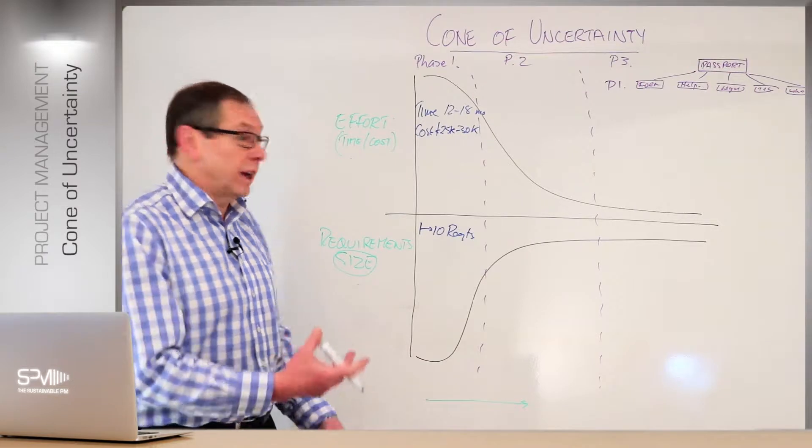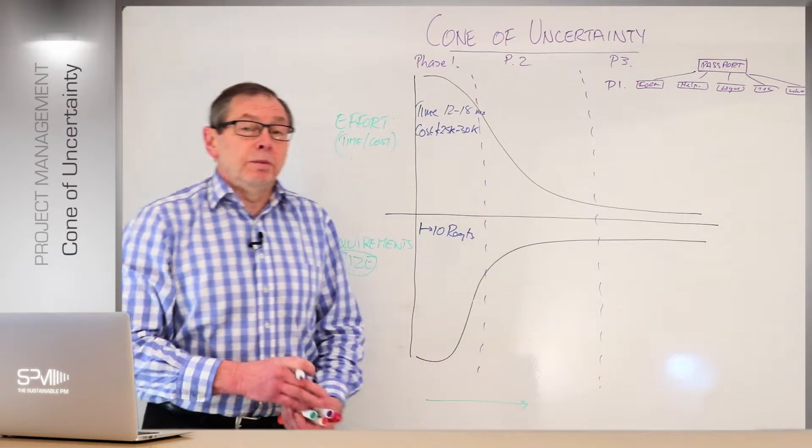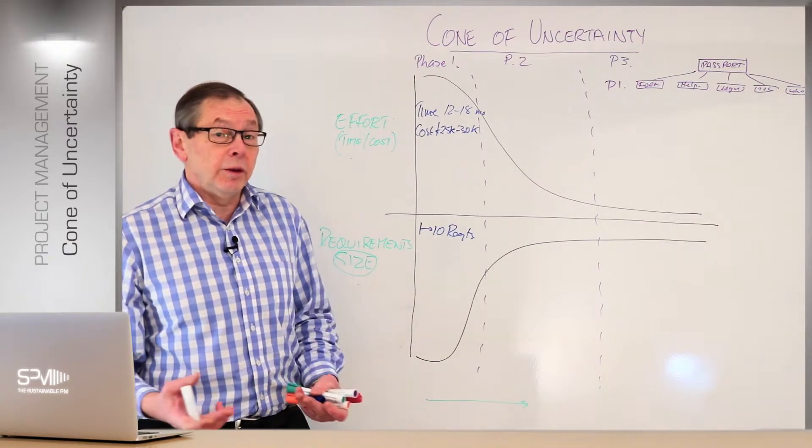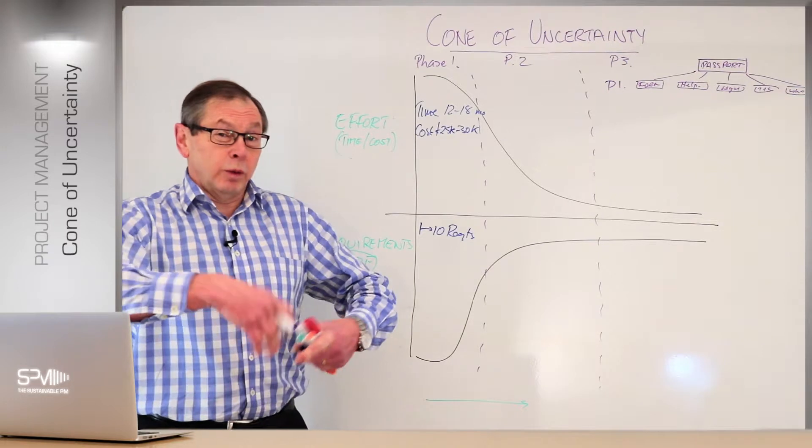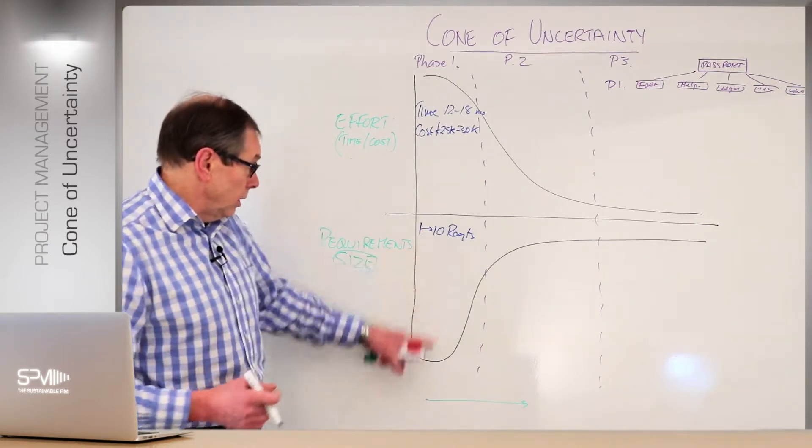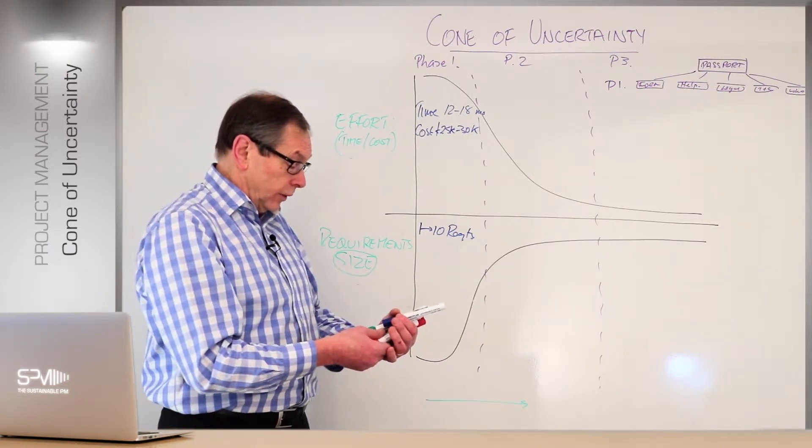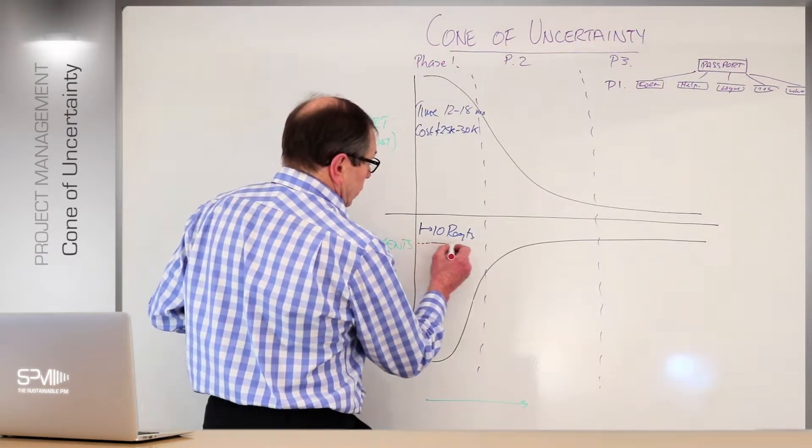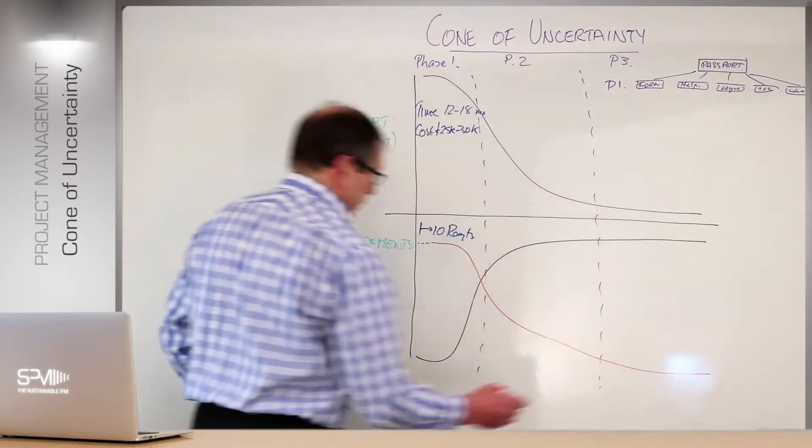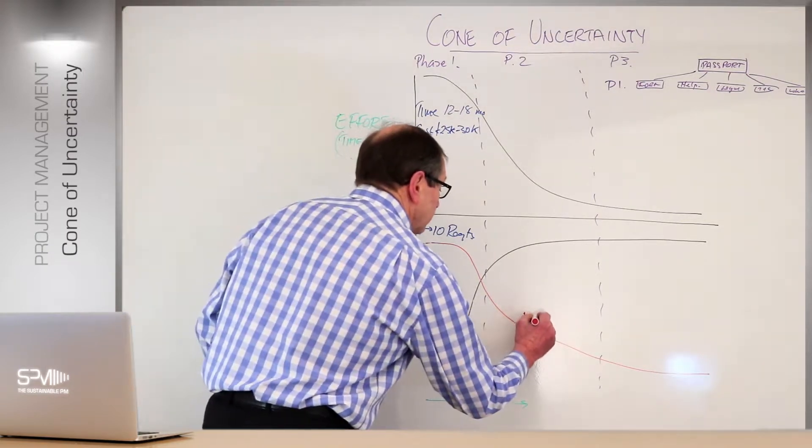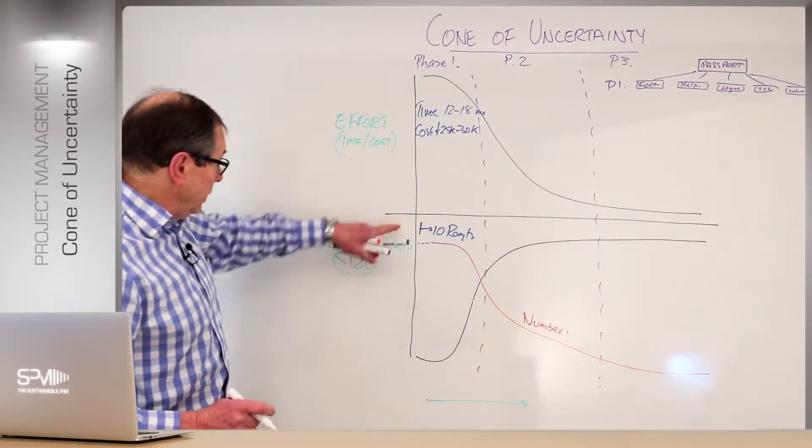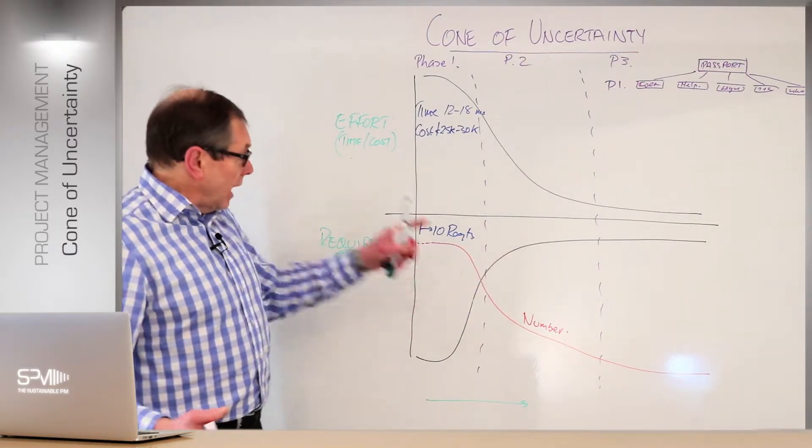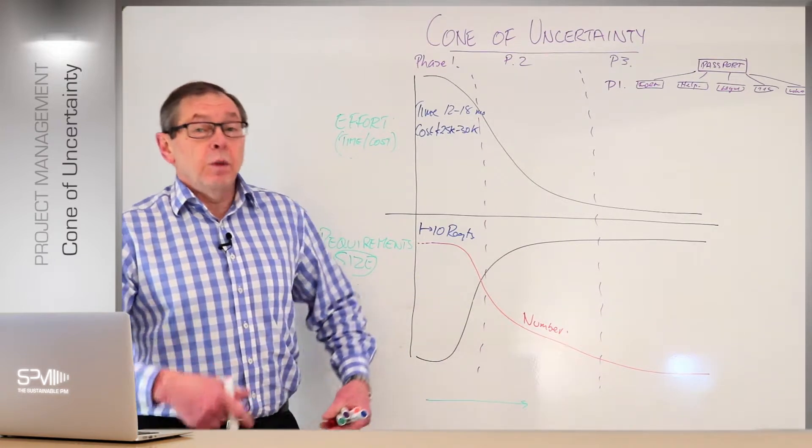At the beginning, we have a very small number of requirements, one to 10. What we're trying to do is understand, can we build it to the time and budget? Can the supplier fit it in that timeframe based on small amounts of information? If I draw this graph slightly differently, we could look at the number of requirements. This looks at the number of requirements we have. So as we go through the project, the requirements break down even further, we get a bigger number.